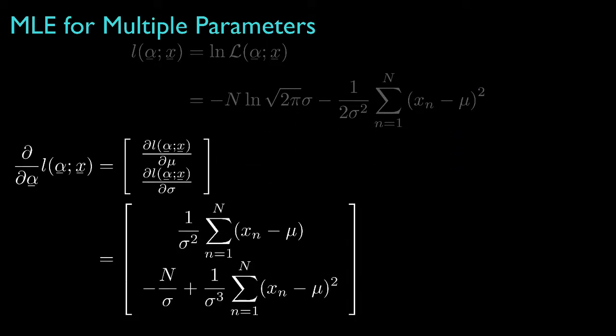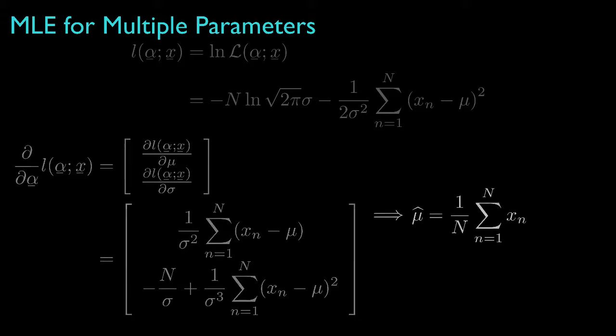To find the parameters that maximize this log likelihood, we might start by evaluating the gradient of the log likelihood with respect to the parameters. Then, if we set this gradient equal to zero, the estimator for mu would be the sample mean for the data.